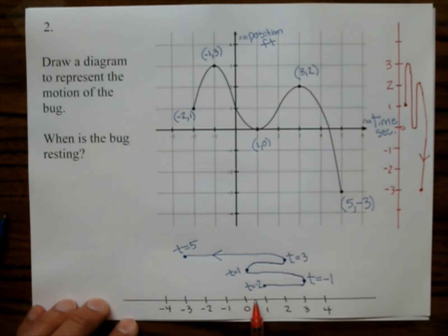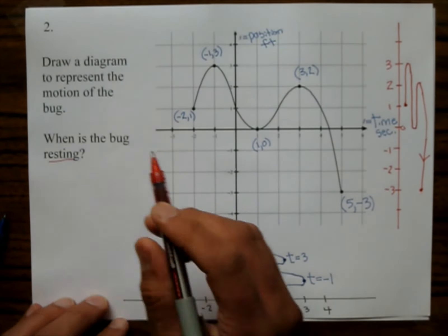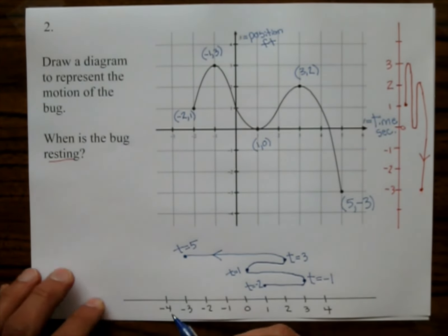And so this describes or represents the motion of the bug. And we also are introduced to negative times, which is not that bad. It's just what's happening like two seconds ago. So that is the deal. So, resting.